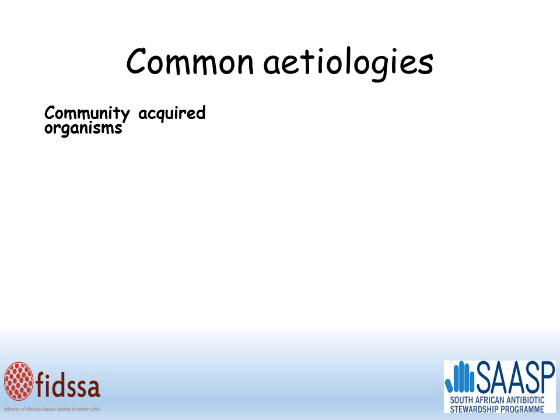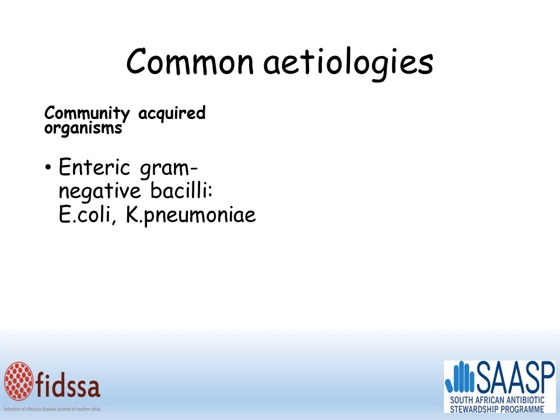In terms of common etiologies, for community-acquired infections, the causative organisms are usually from inside the bowel, such as enteric gram-negative bacilli like E. coli and Klebsiella pneumoniae, anaerobes, and enterococci.